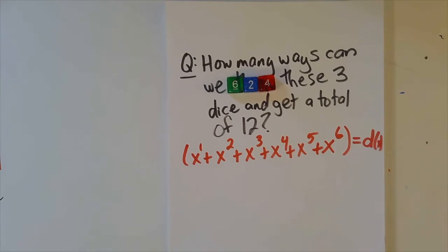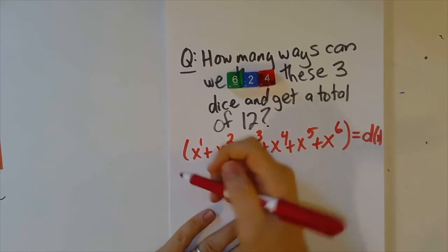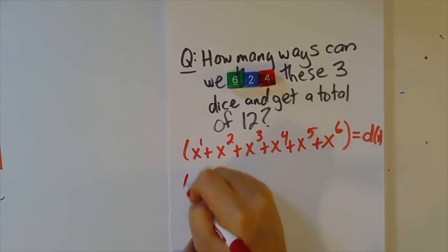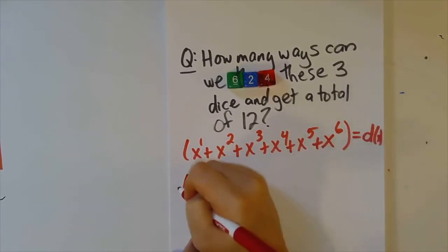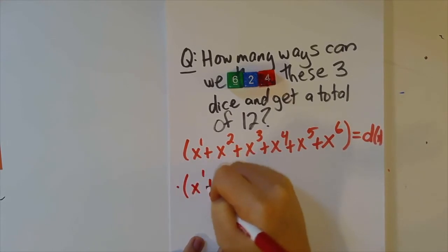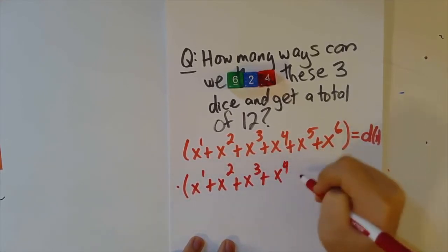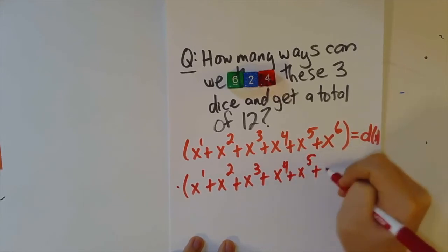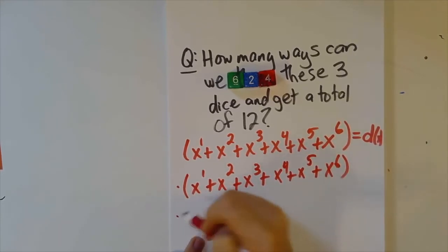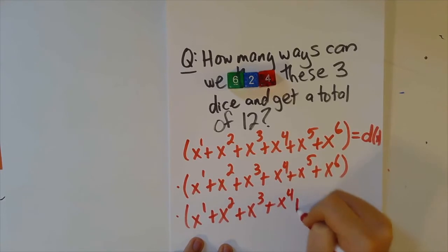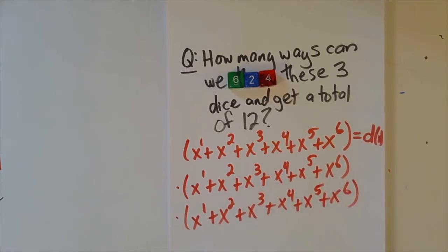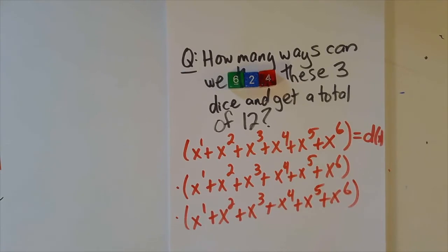And what I want to do is I want to think about what happens when I take this polynomial and I actually multiply it by itself. And then multiply it by itself again.